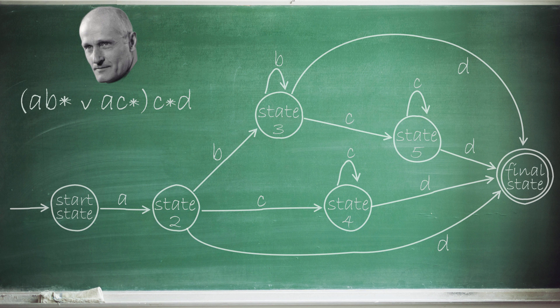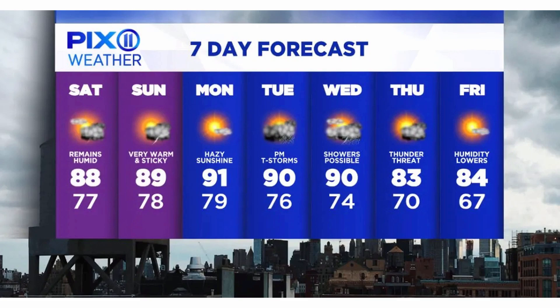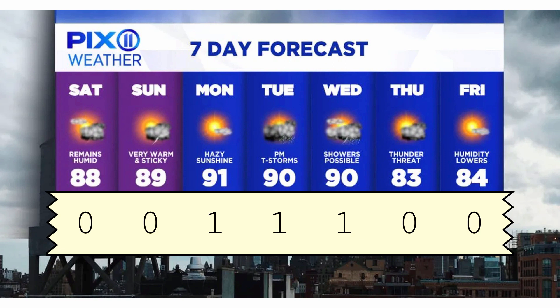I'll use a simple system to demonstrate. The definition of a heat wave varies based on location. We'll use New York City, where at least three consecutive days of 90-plus degree weather indicates a heat wave. Let's say the daily high temperatures actually reached these forecasted numbers. How could a low-memory system determine if a heat wave occurred this week? First, we could simplify the input by assigning a 0 to days that did not reach 90 degrees and a 1 to days that did.